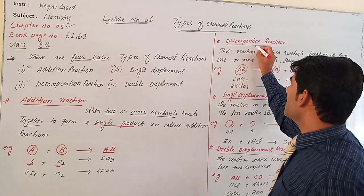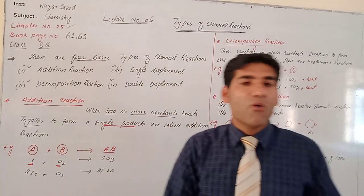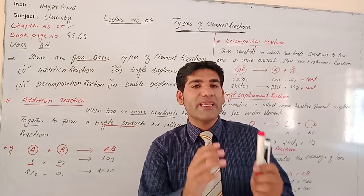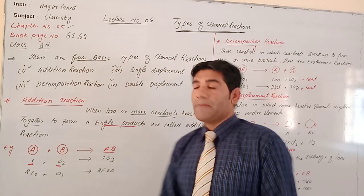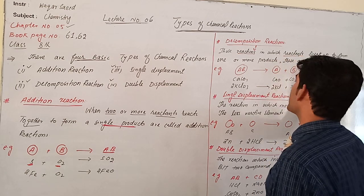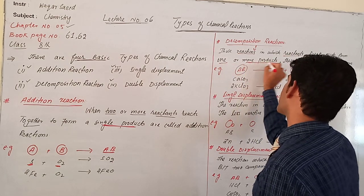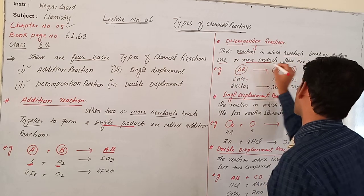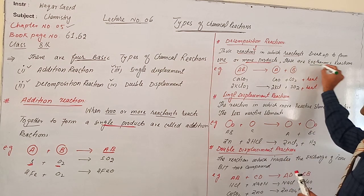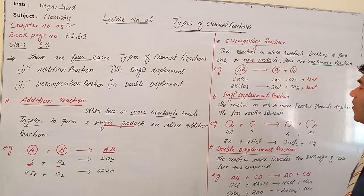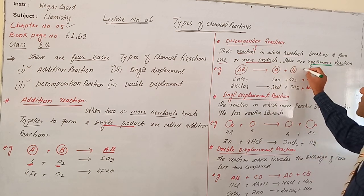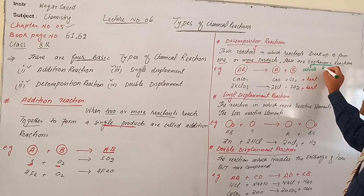The second type is decomposition reaction. Decomposition means to break 1 reactant into 2 or more products. Those reactions in which a reactant breaks to form 2 or more products are called decomposition reactions. These are exothermic reactions — 'exo' means outside, and 'therm' means heat.